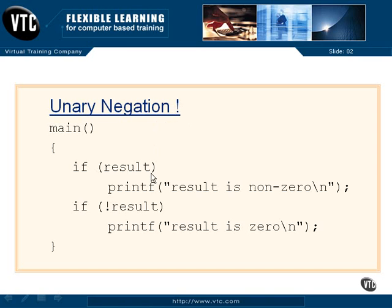Here we say if this result, and what we're doing is we're trying to see if that variable result is non-zero. If it is non-zero, we consider it to be true. If it is zero, a null value or zero value.